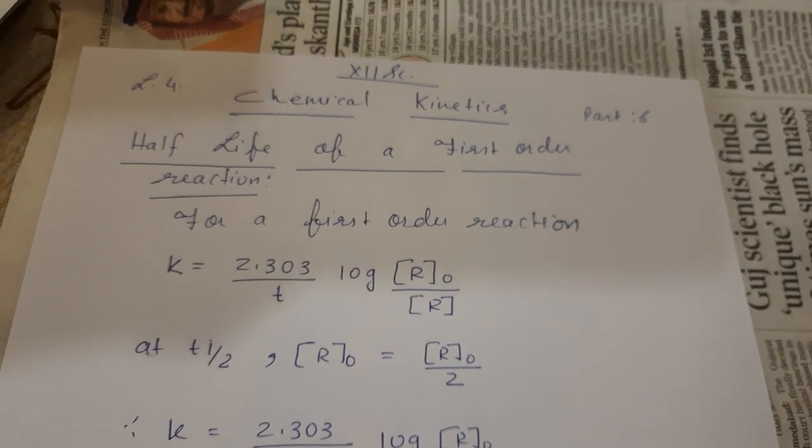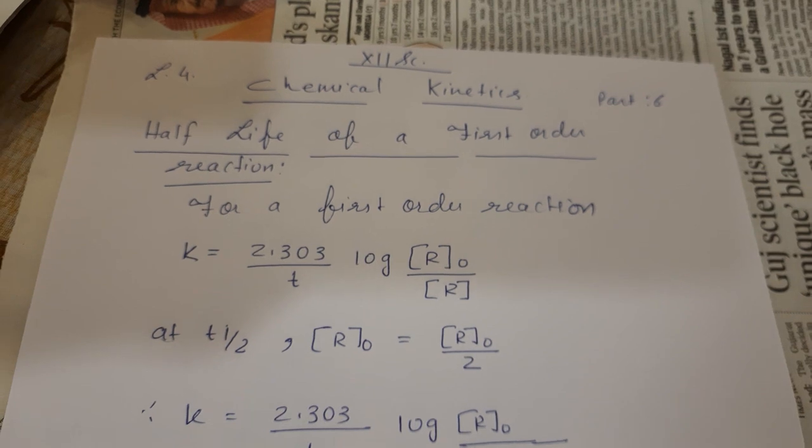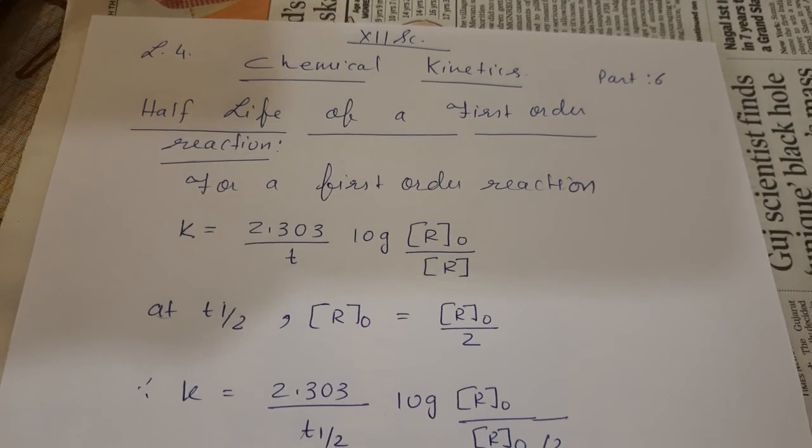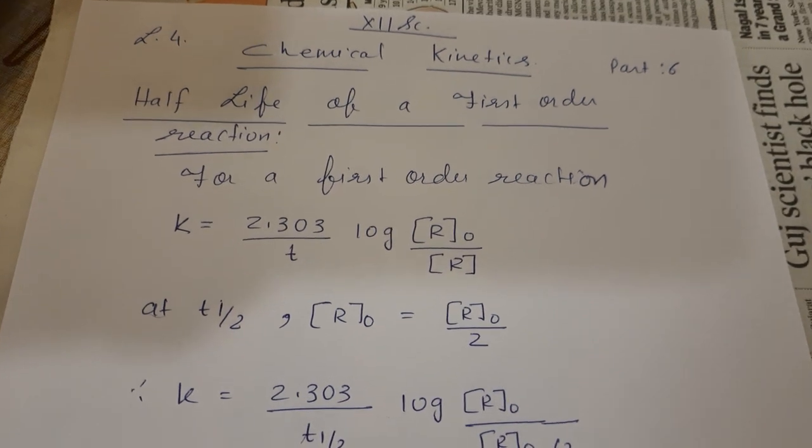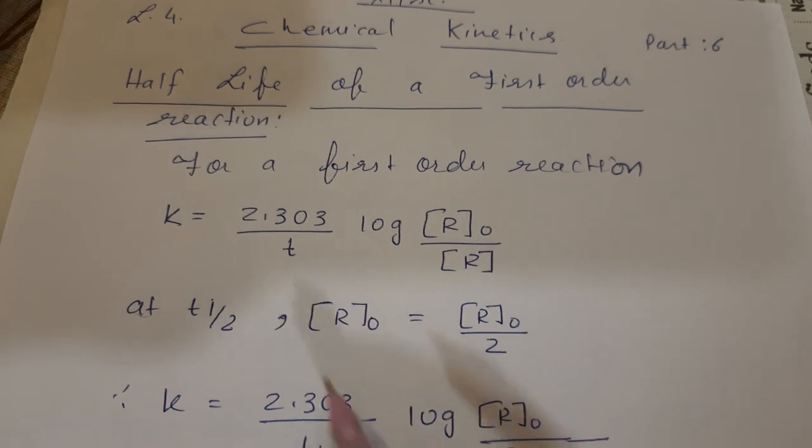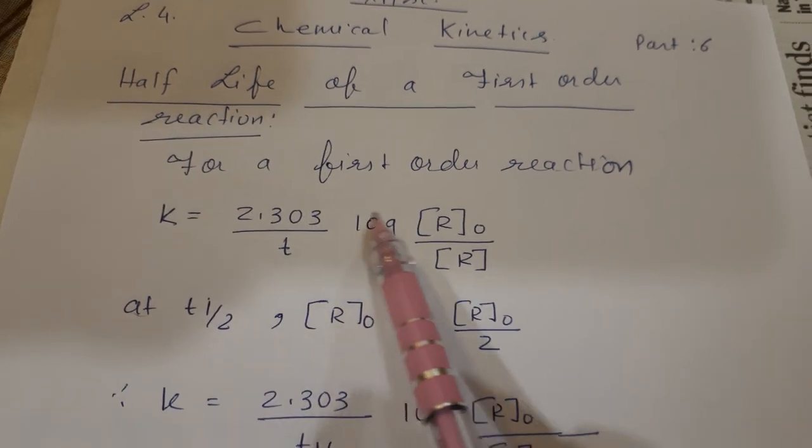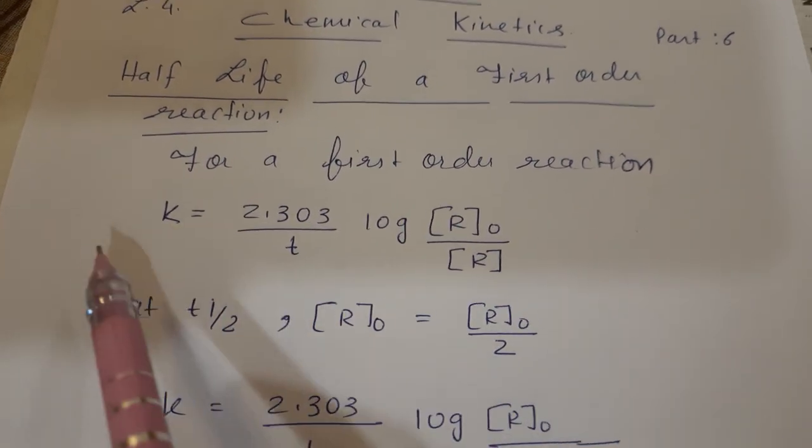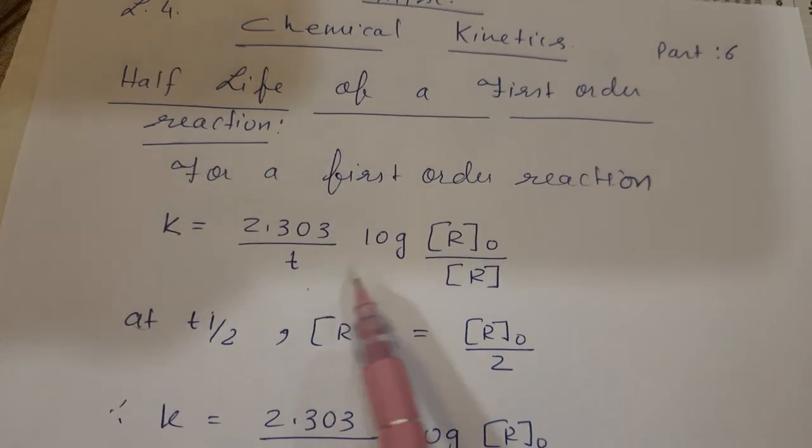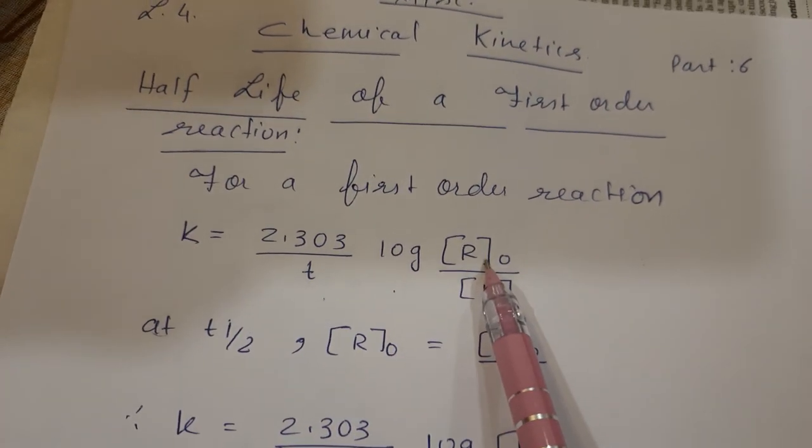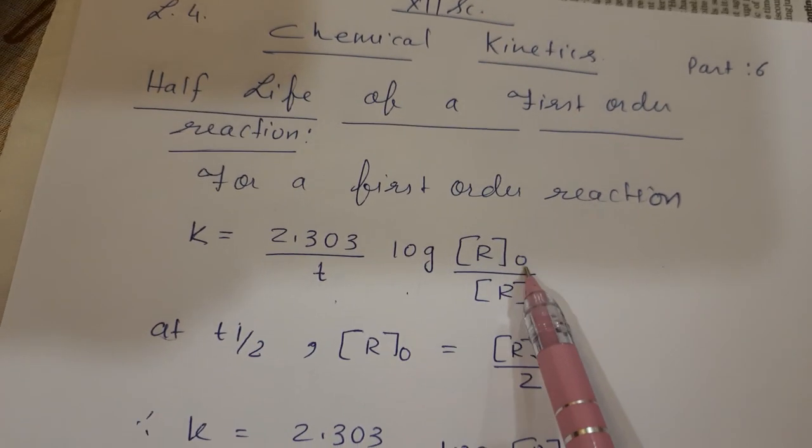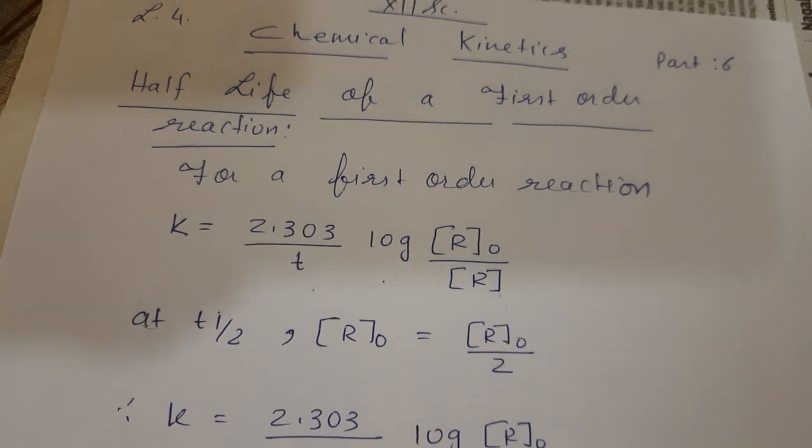Good morning children. Today we're discussing half-life period of a first-order reaction. Half-life is the time at which the concentration of the reactants becomes half. For a first-order reaction, we had seen that k equals 2.303 upon t log original concentration upon final concentration, R₀ upon R or R₀ upon Rₜ - all are the same, original concentration upon final concentration.